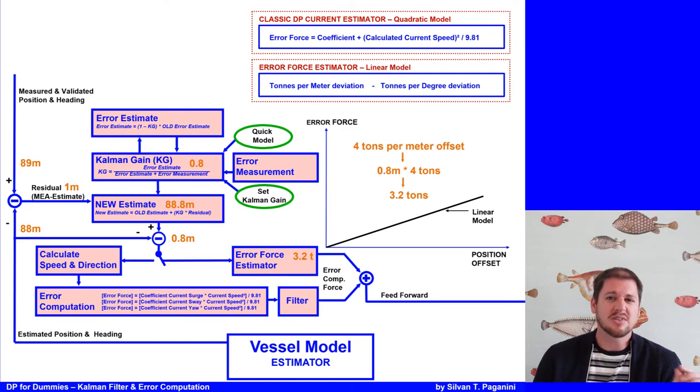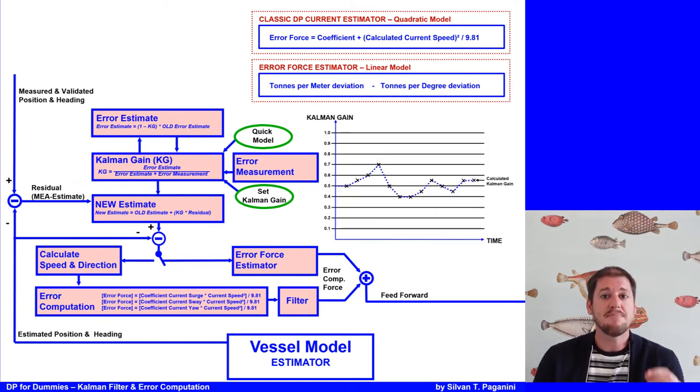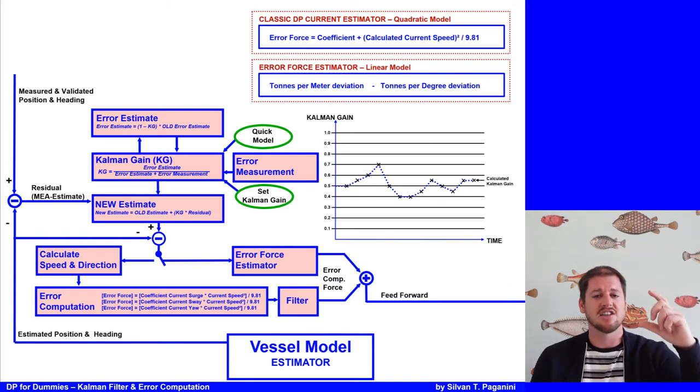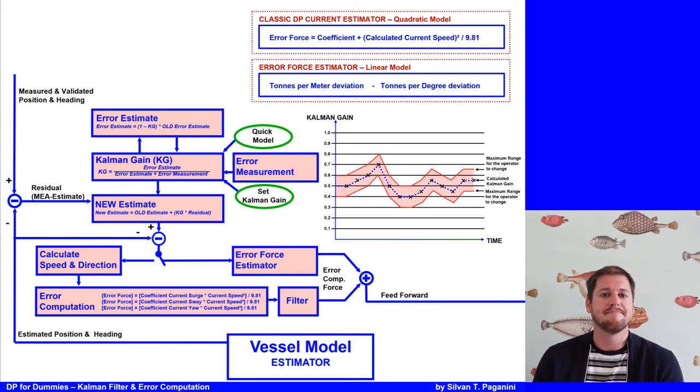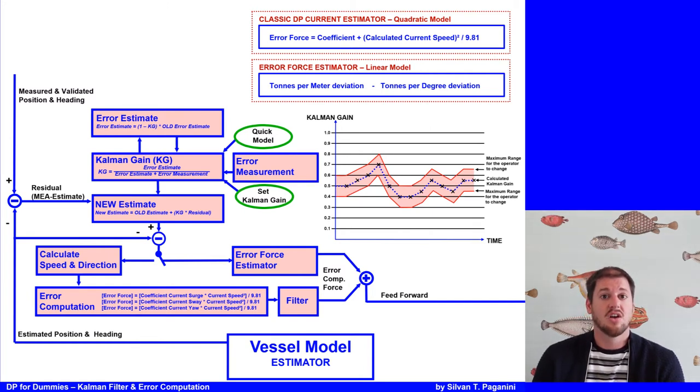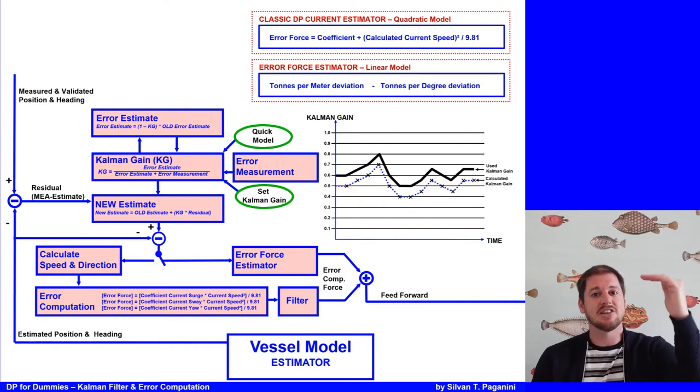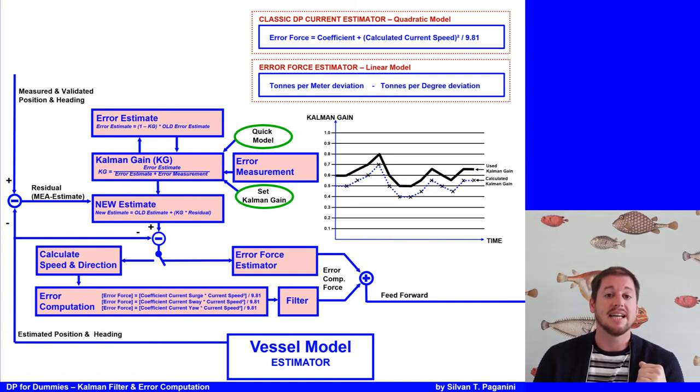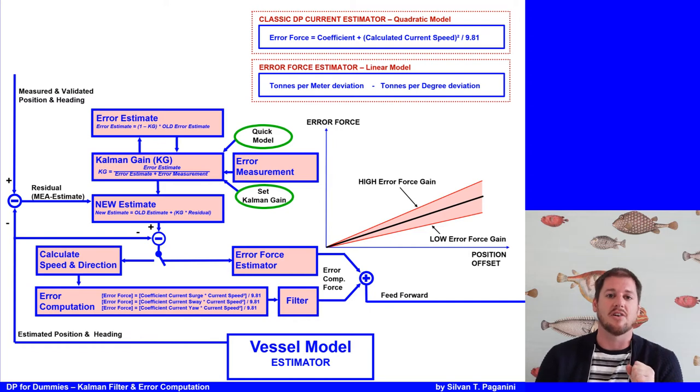The DP manufacturer still put safety into the system. The DPO can only change the Kalman gain in a range plus minus of the Kalman gain. That's because, otherwise, if somebody would put it to 0, the vessel would straight be in dead reckoning mode, because the input from the measurement would be completely ignored. And vice versa, would also make the vessel very nervous. Because of this problem, some manufacturers changed the approach so that the Kalman gain increased on a fixed level above the calculated Kalman gain, like a constant quick model, just higher, and the operator can change the level of tons applied per offset in the linear error force estimator. They call it error force gain.